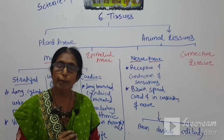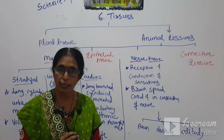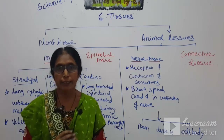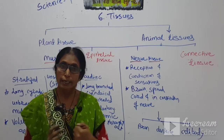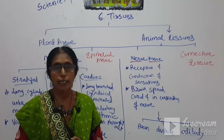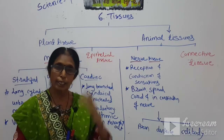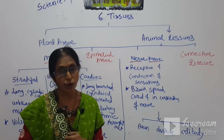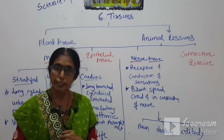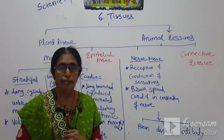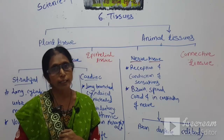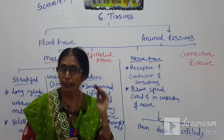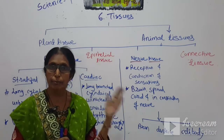In simple permanent tissues: sclerenchyma, colenchyma, and parenchyma. In complex permanent: xylem and phloem. Xylem is responsible for upward transportation of water and minerals from the root, and phloem is responsible for conduction of food material prepared by the leaves of a plant. All these we have discussed in previous periods.